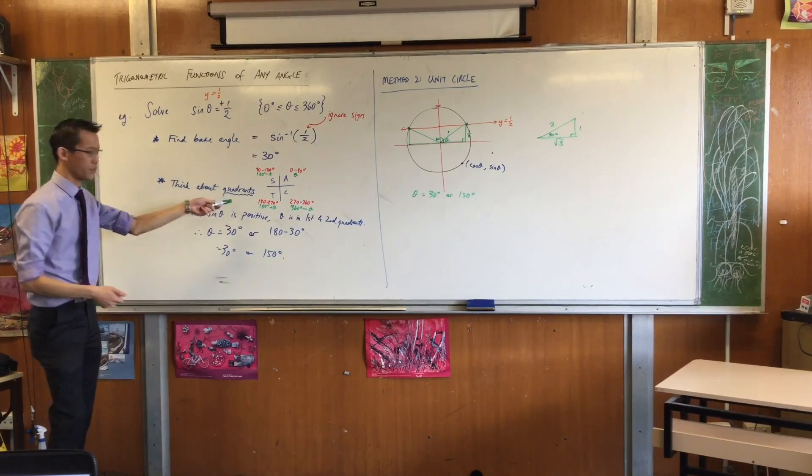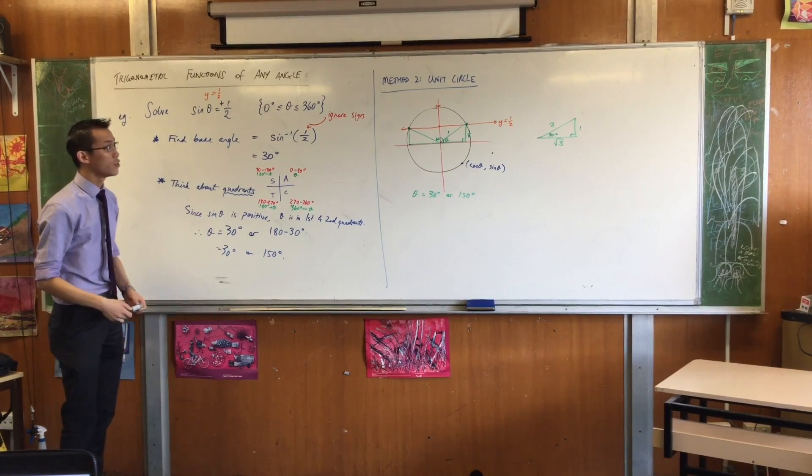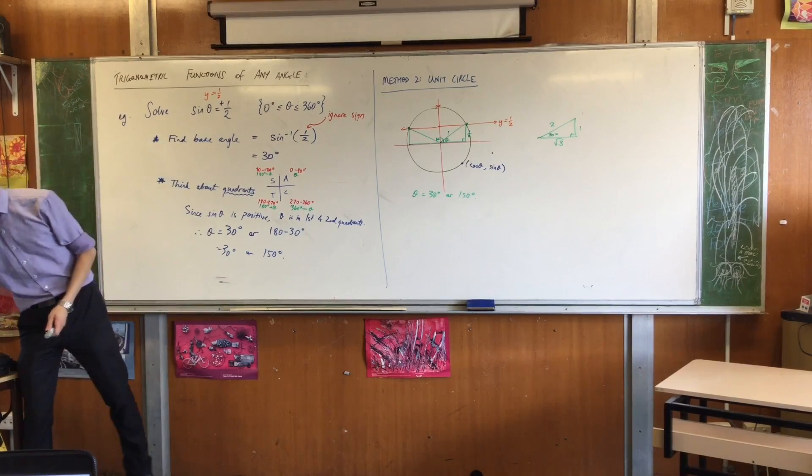All right, method one was quadrants. Method two was the unit circle. Method three is graphing.